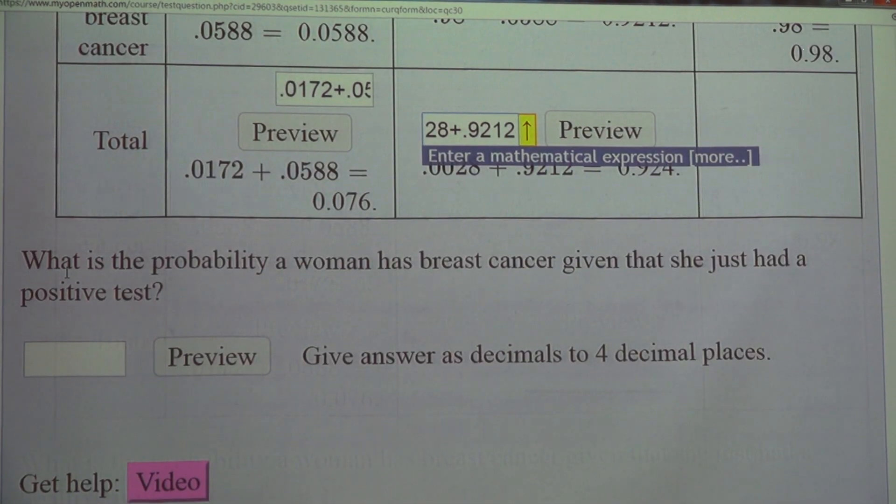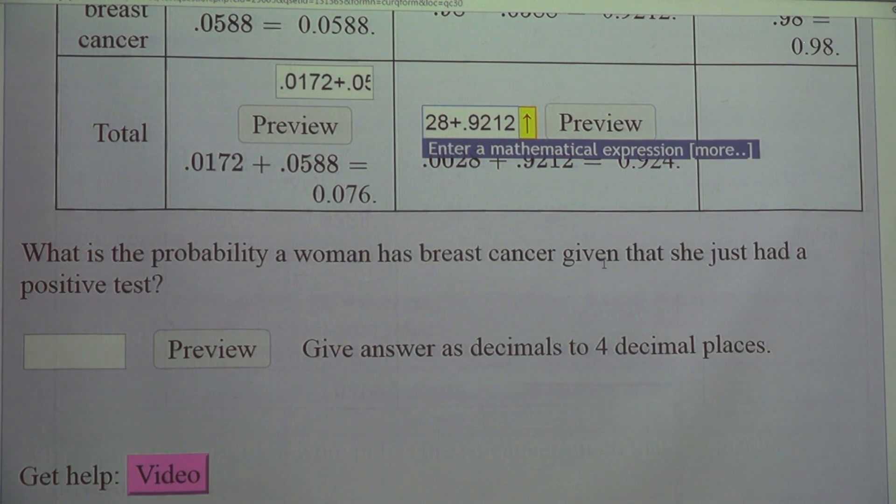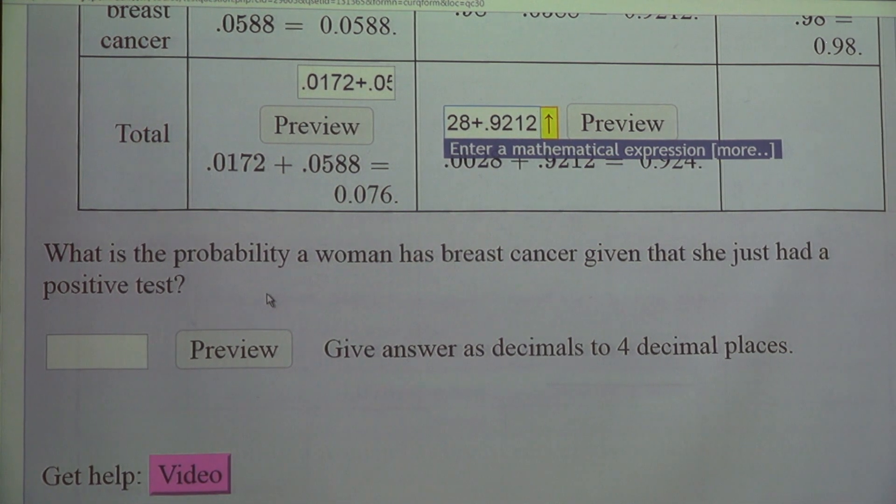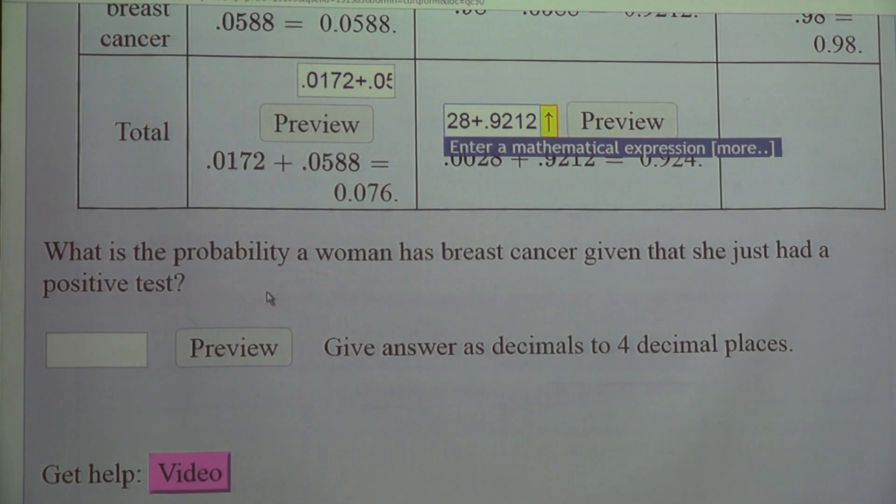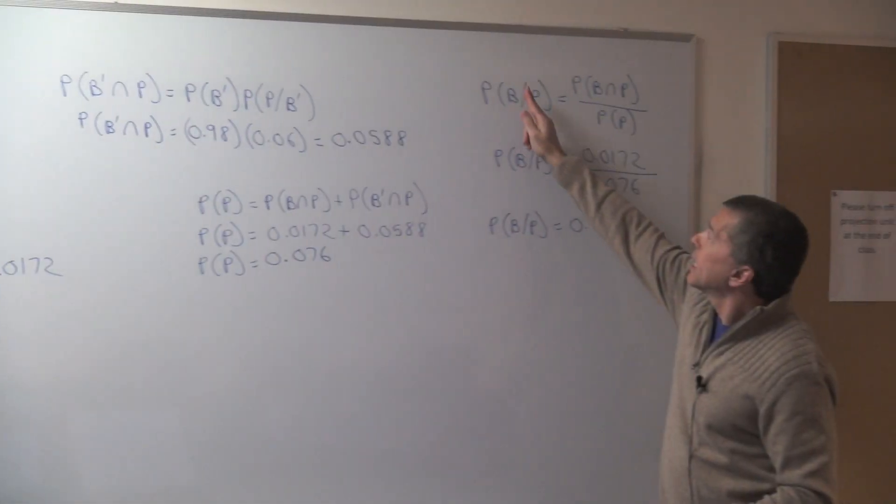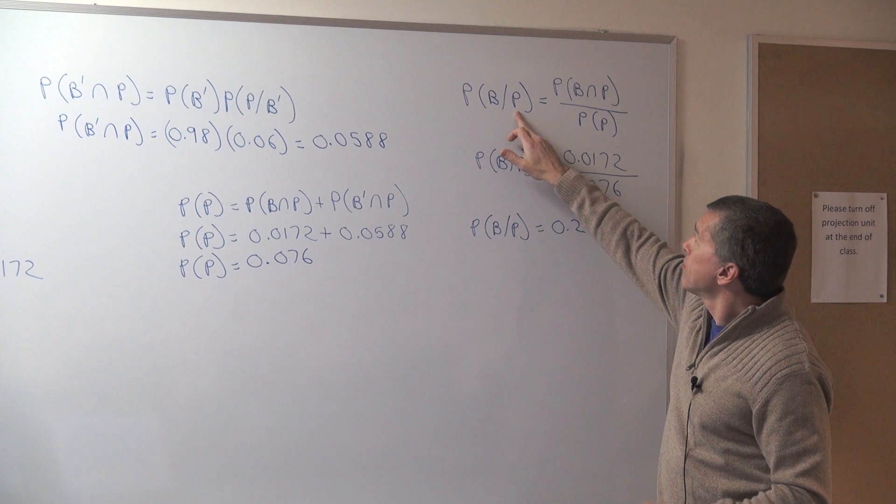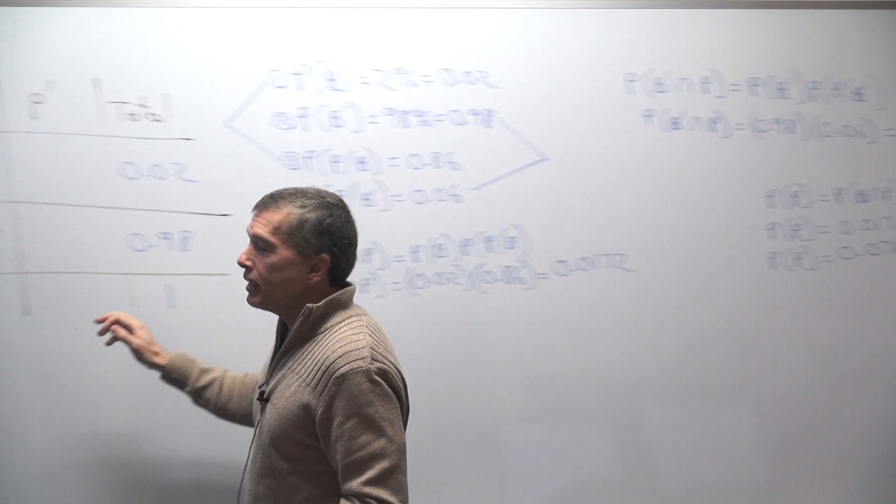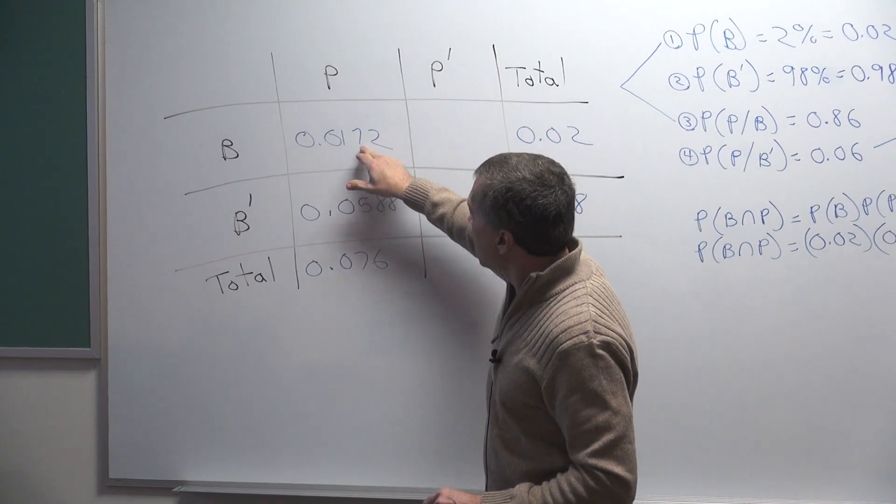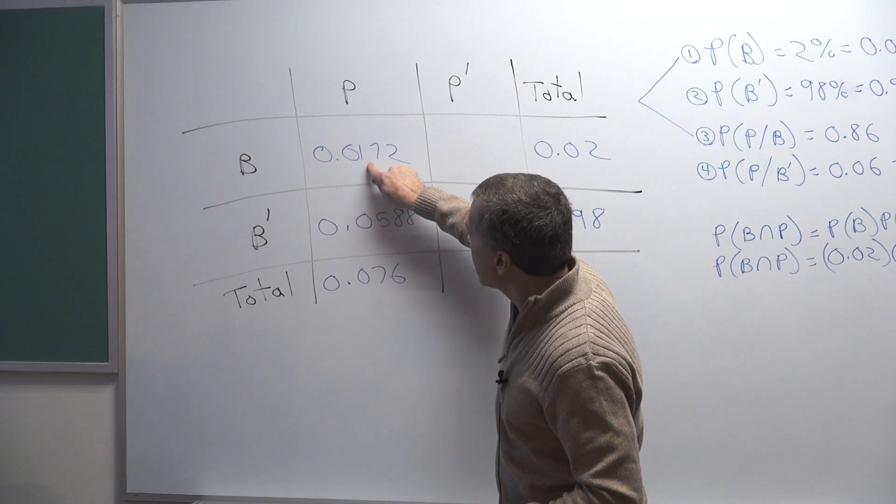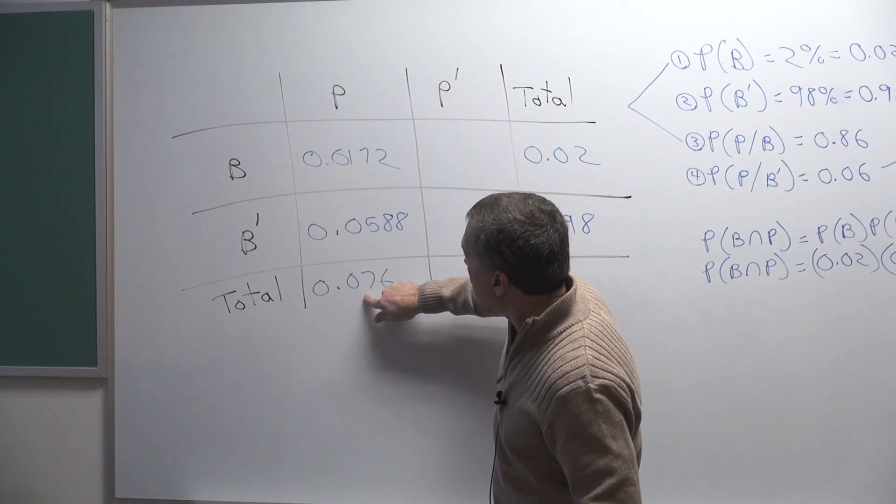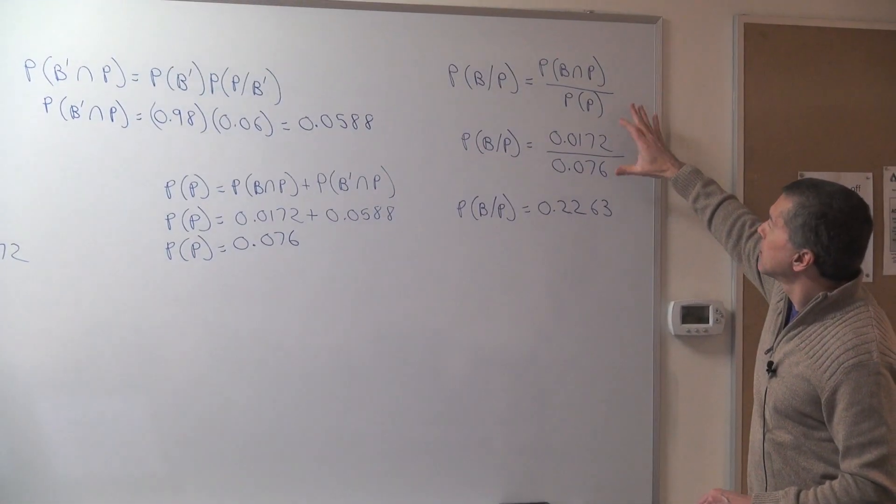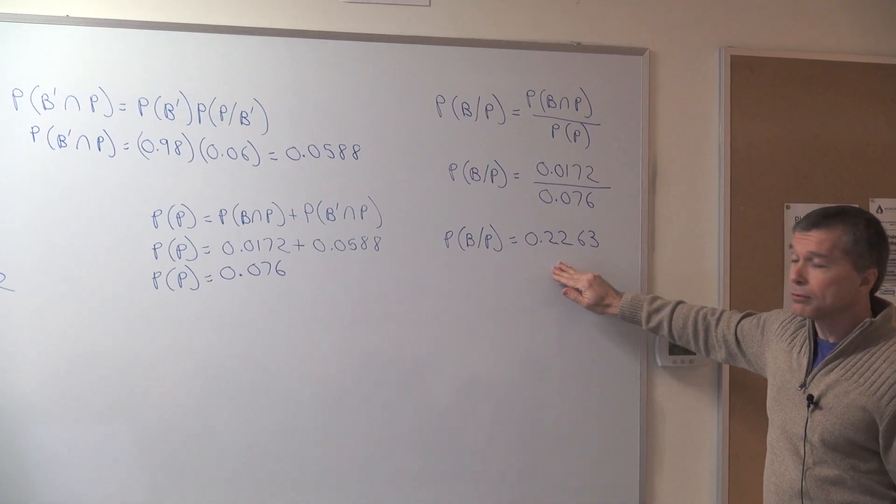And then the last question that it says here is what is the probability a woman has breast cancer given that she just had a positive result. So this right here means the probability of breast cancer given that she had a positive result. To get that I got to take this row over here and divide that by the total right here. Probability of breast cancer given it's out of the positive result. So I have to divide these two. If you do that you'll get this answer right here.